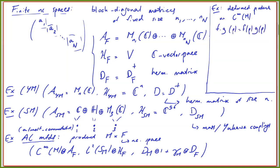So the C∞(M) as a vector space remains the same, but you try to deform the product so that you get some non-commutativity built in. The key example in this context and this workshop would be the Moyal plane.